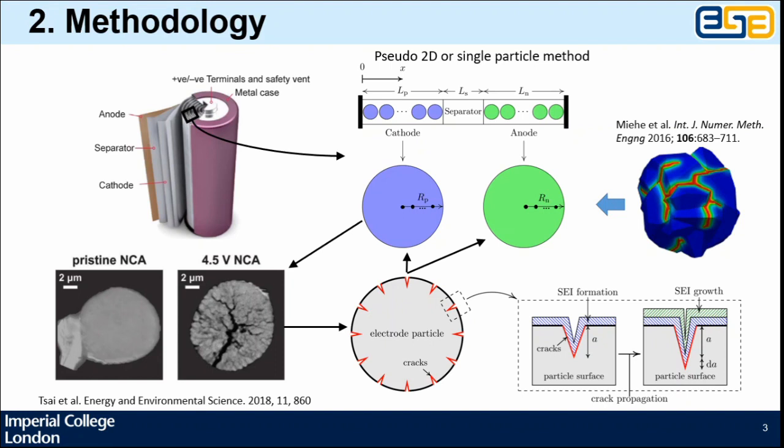For battery cycling, the electrode particles will experience volume change, and the resulting stress causes particle cracking. So in the model we assume microsurface cracks, and when those cracks propagate, they release new surface area for SEI formation and growth and accelerate battery capacity degradation.